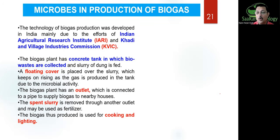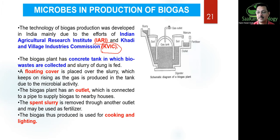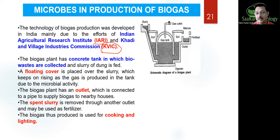The biogas produced is sent through pipes to homes for cooking and lighting — it is an alternative source of energy. Two organizations developed and popularized this technology in India: IARI (Indian Agricultural Research Institute) and KVIC (Khadi and Village Industries Commission). Remember these two names carefully. The biogas plant has a concrete tank where slurry is kept, a floating cover where gas collects, and an outlet which contains spent slurry that can be used as manure.